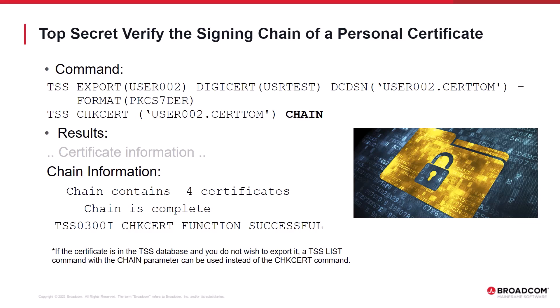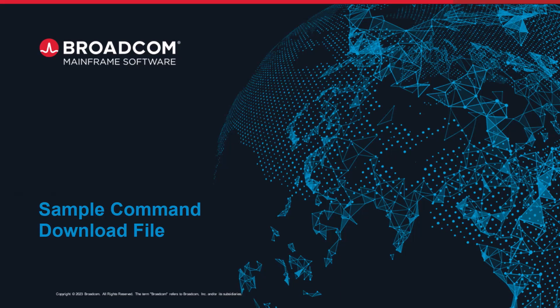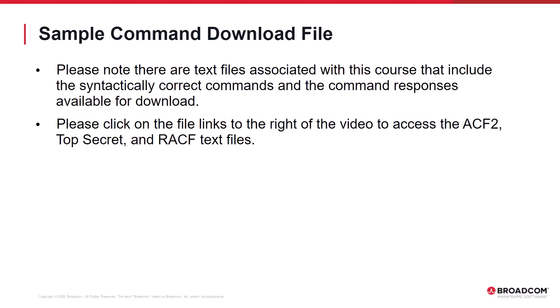Note the similar display of certificate information and chain information for Top Secret. Here is the RACF equivalent RACDCERT command with the list chain parameter, which also displays similar certificate information and chain information. Please note there are text files associated with this course that include the syntactically correct commands and command responses available for download. Please click on the file links to the right of the video to access the ACF2, Top Secret, and RACF text files.